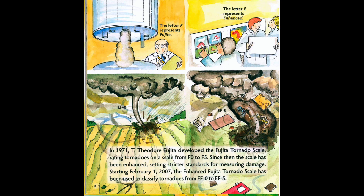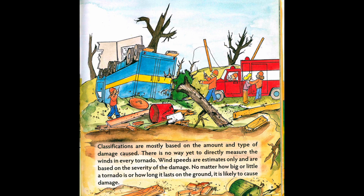In 1971, T. Theodore Fujita developed the Fujita Tornado Scale, rating tornadoes on a scale from F0 to F5. Since then, the scale has been enhanced, setting stricter standards for measuring damage. Starting February 1st, 2007, the Enhanced Fujita Tornado Scale has been used to classify tornadoes from EF0 to EF5. The letter F represents Fujita. The letter E represents Enhanced. Classifications are mostly based on the amount and type of damage caused. There is no way yet to directly measure the winds in every tornado. Wind speeds are estimates only and are based on the severity of the damage.